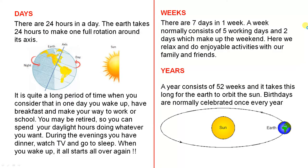There are 24 hours in a day. The Earth takes 24 hours to make one full rotation around its axis. It is quite a long period of time when you consider that in one day you wake up, have breakfast and make your way to work or school. You may be retired, so you can spend your daylight hours doing whatever you want. During the evenings you have dinner, watch TV and go to sleep. When you wake up it all starts all over again.